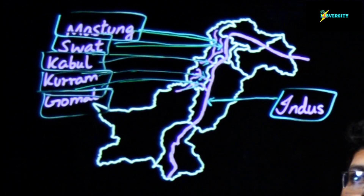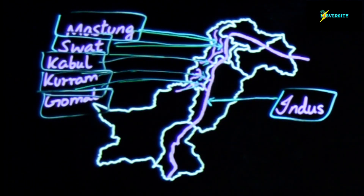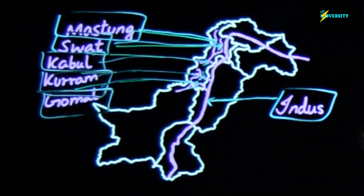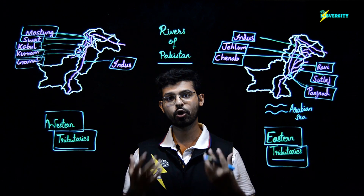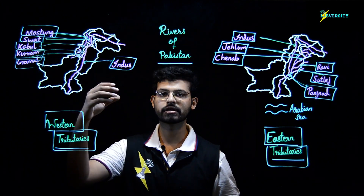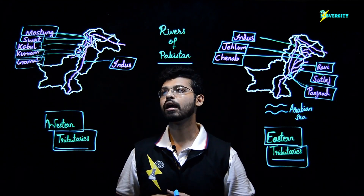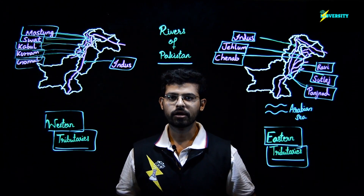As compared to the eastern tributaries, the western tributaries cover a very small area and do not have much volume of water in them. River Swat and Kabul have more volume of water compared to the other western tributaries. Moreover, these rivers are short, not very wide, and cover a very small area.